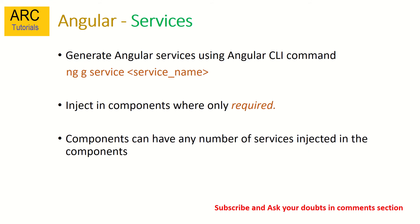Here is the command to generate an Angular service: 'ng generate service <service-name>', or the shortcut 'ng g service <service-name>'. You can give any service name and generate any number of services. You inject them into components only where required. Components can have any number of services injected — for example, you can have 10 services used across 20 or 50 components.